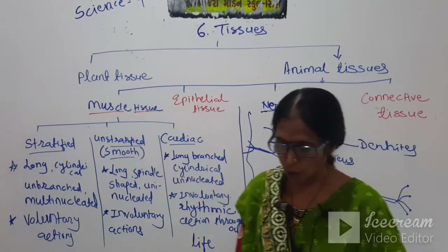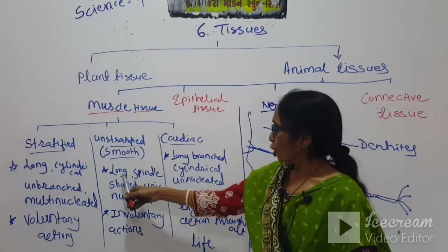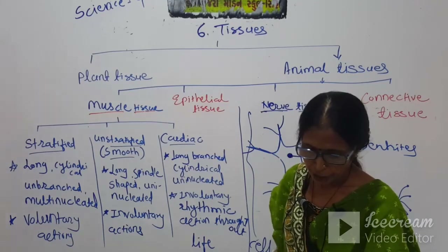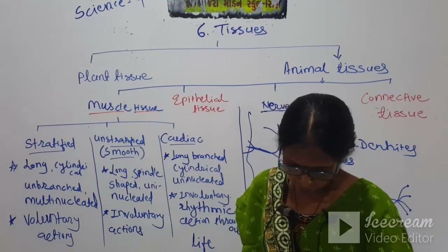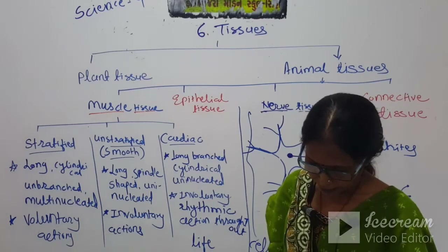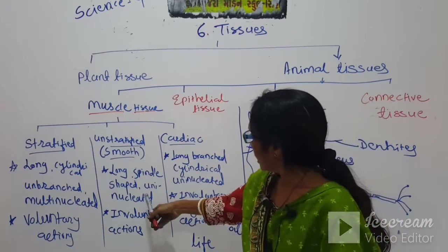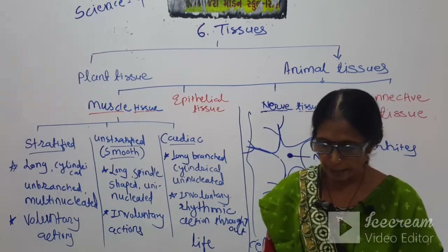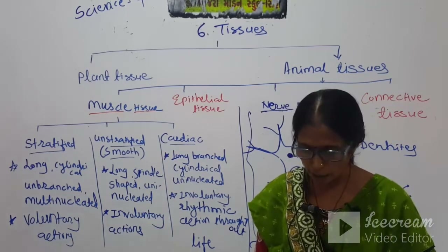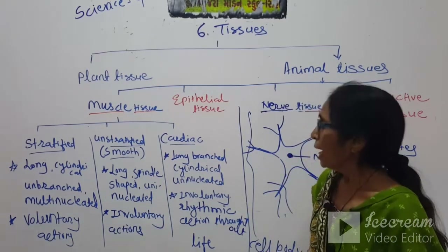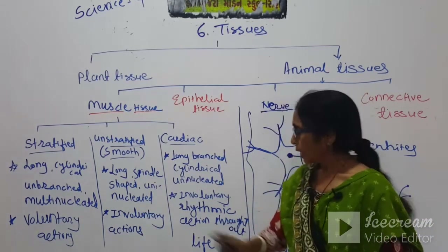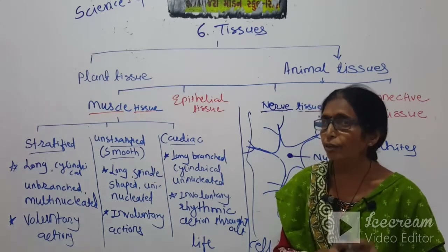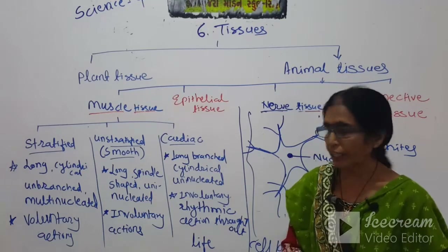Number 2 — unstratified means smooth muscles. They are long and spindle-shaped, and uninucleated, meaning they have a single nucleus. They are responsible for involuntary actions — without involvement of the brain, such as reflex or immediate actions.